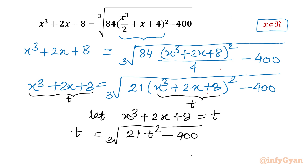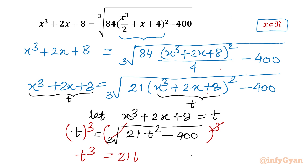Now I will consider cubing both sides. After cubing, the power 3 will cancel with the cube root. So I can write our equation as T³ = 21T² − 400.